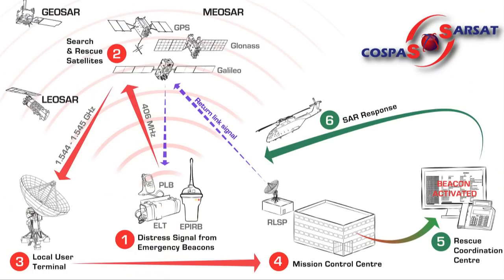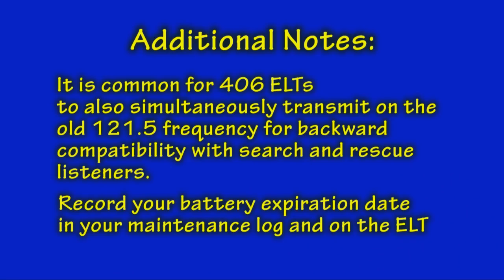Choosing an ELT for your homebuilt from an avionics supplier or from eBay should be a little bit easier now that we appreciate the differences in some of these models — it also helps explain the variation in prices between them. It is common for a 406 ELT to also simultaneously transmit on the old 121.5 frequency for backward compatibility with search and rescue listeners. Also, be sure to record your battery expiration date in your maintenance log and on the ELT itself.